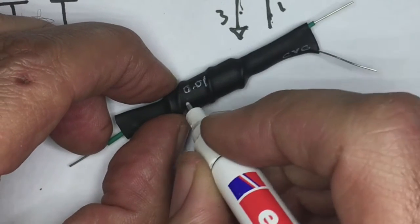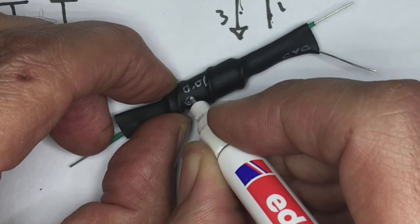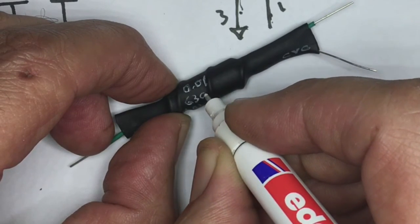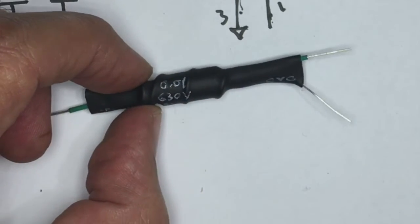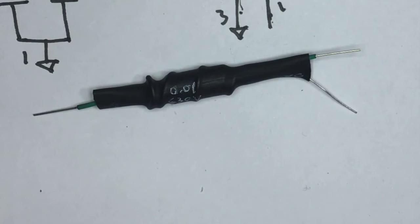0.01 and it's 630 volts. There we have it. Done. Simple.